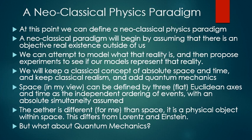At this point, we can define a neoclassical physics paradigm. A neoclassical paradigm will begin by assuming that there is an objective, real existence outside of us. We can attempt to model what that reality is, and then propose experiments to see if our models represent that reality. We will keep a classical concept of absolute space and time, and keep classical realism. Space can be defined by three flat Euclidean axes, and time as the independent parameter that orders events. And absolute simultaneity can be assumed. The ether is different than space — the ether is a physical object within space. And this idea differs from those of Einstein and Lorentz.